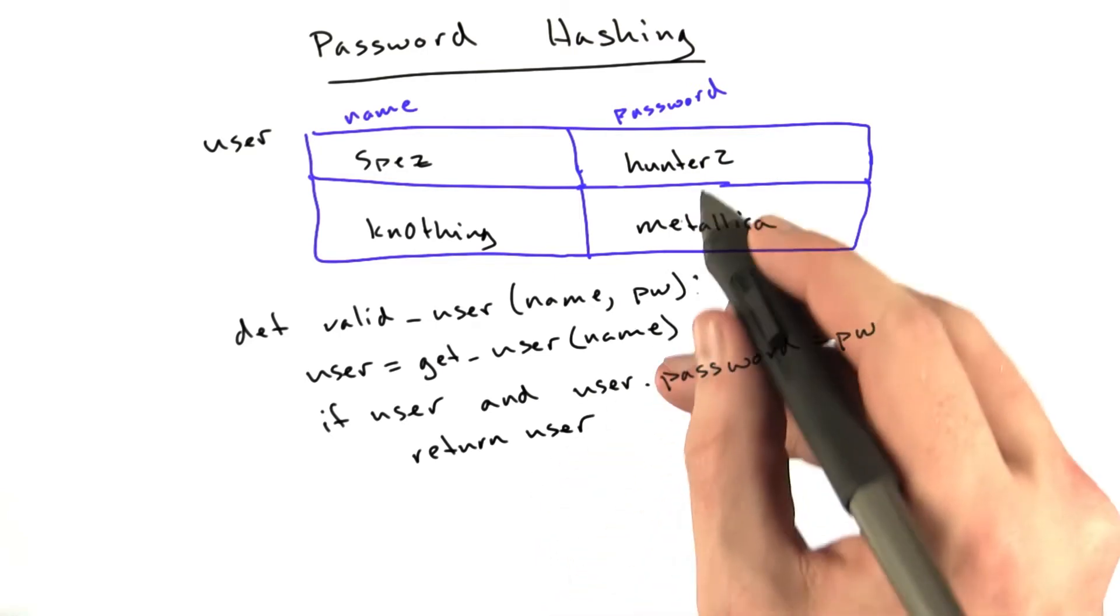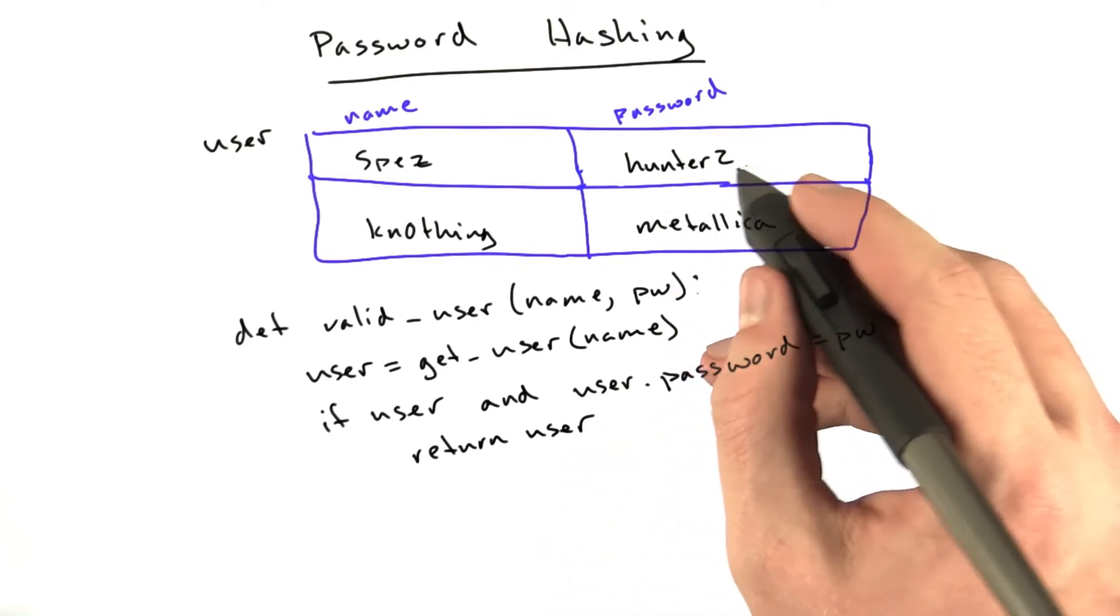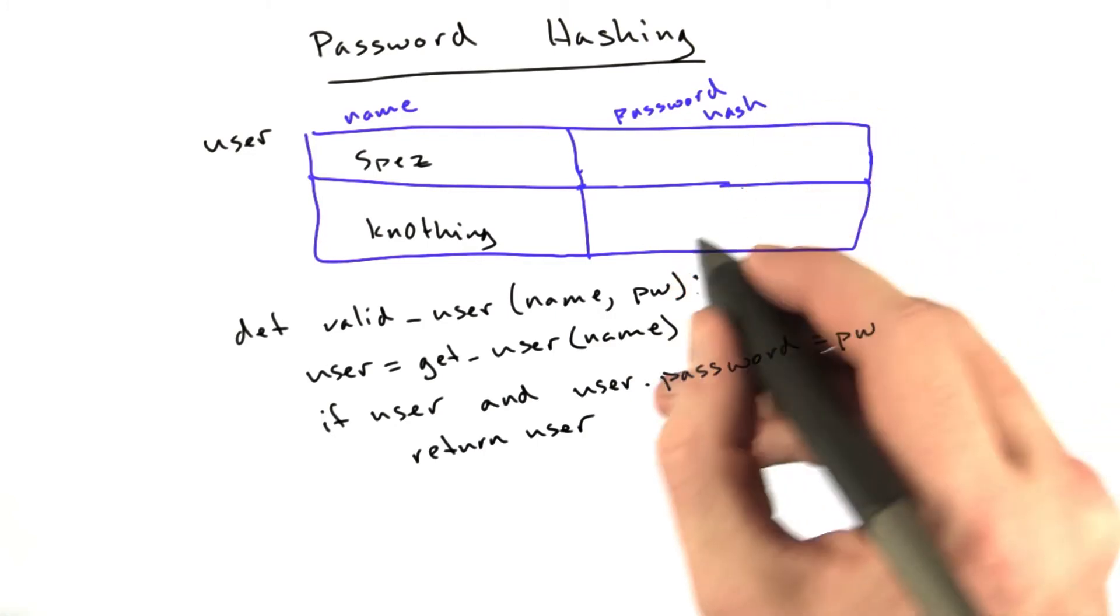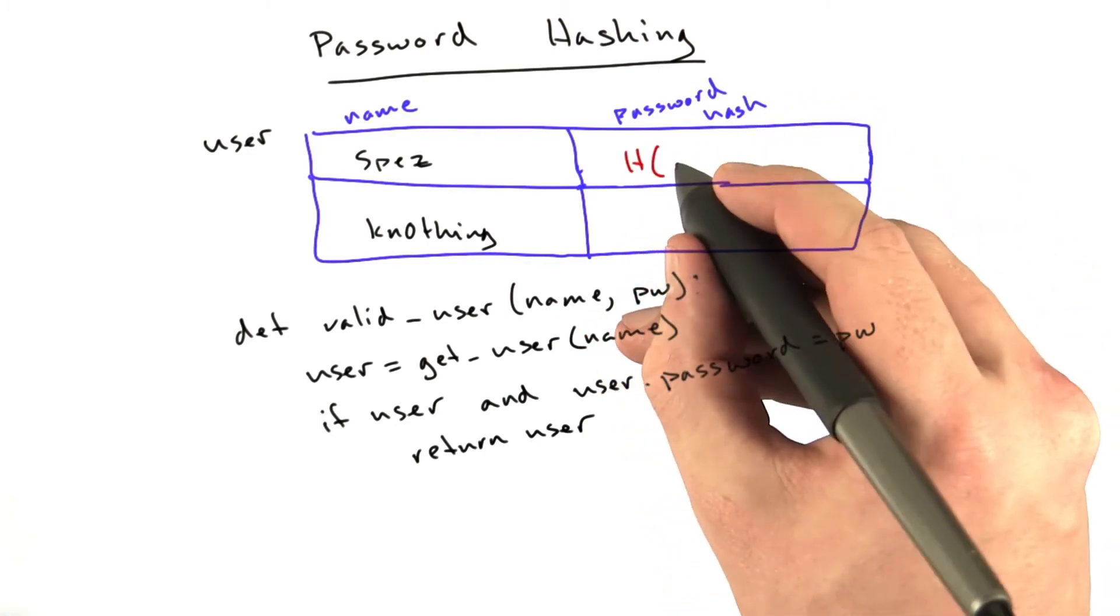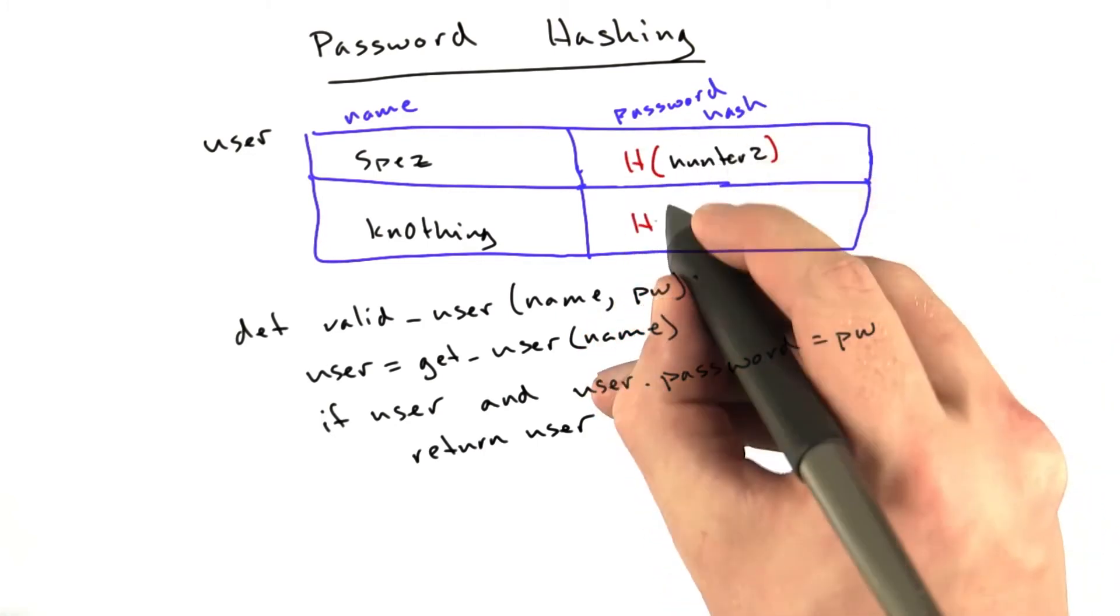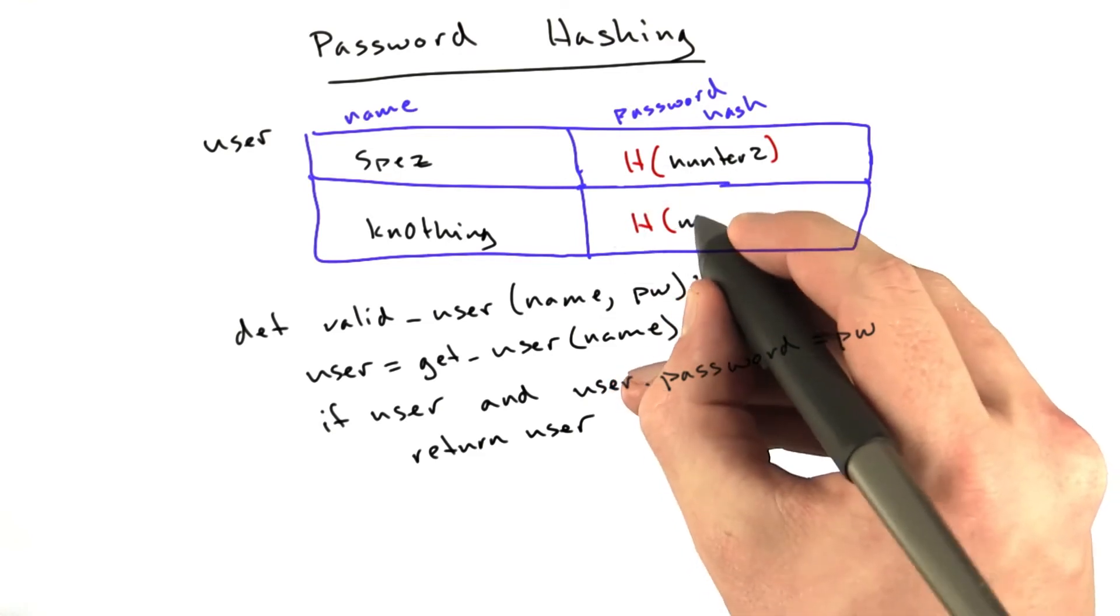So what we want to do is instead of storing these plain text passwords in our database, we'll store password hash in our database. So we'll have h of hunter2 and h of Metallica.